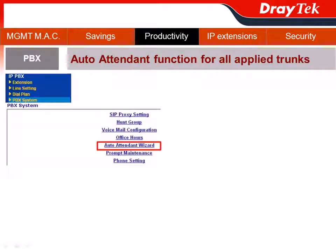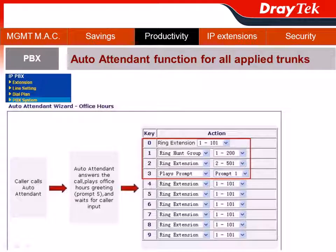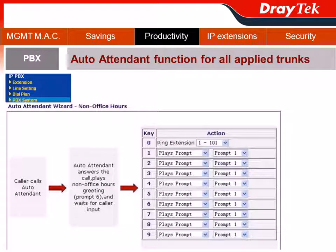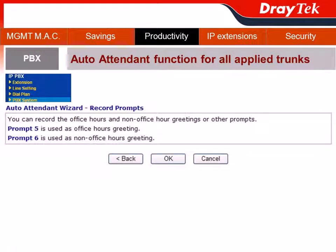After the trunk and office hour settings, you can complete your auto attendant configuration using the wizard function. Go to PBX System and choose Auto Attendant Wizard. Every time I see the word wizard, I'm happy, because the following configuration steps are quick — just configure the office hour, then the non-office hour, and done.